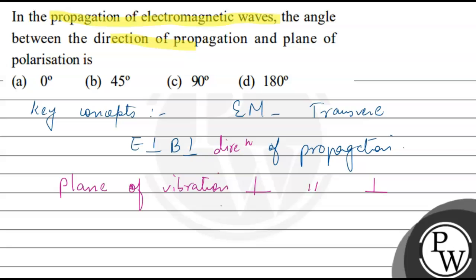The direction of propagation is perpendicular to the plane of polarization. So the angle between the direction of propagation and the plane of polarization is 90 degrees.